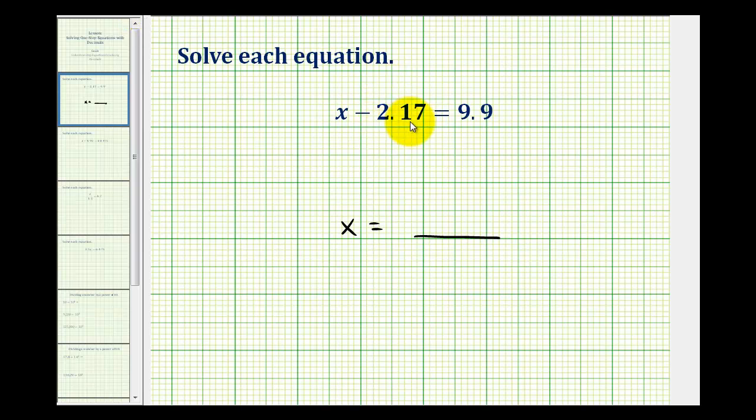Well, the opposite of minus 2.17 would be plus 2.17. And we could add this on the left side of the equation as long as we add the same number to the right side of the equation. So we'll have to put plus 2.17 on the right side as well. And notice when I wrote this, I knew I was going to have to add these decimals, and therefore I lined up the decimal point and the corresponding place values.